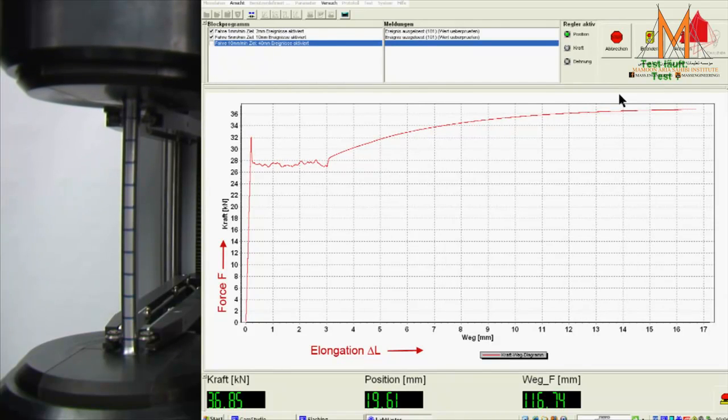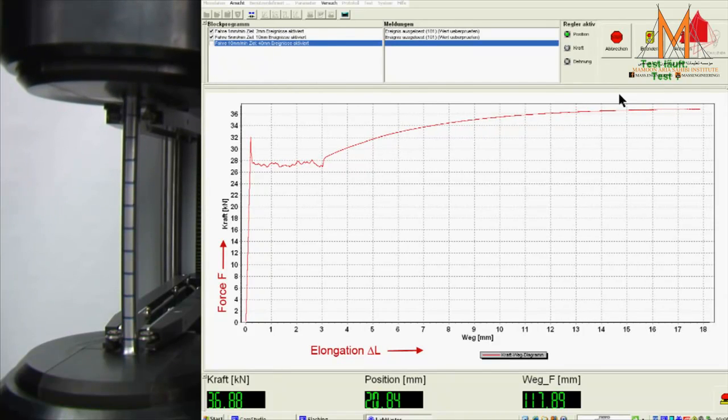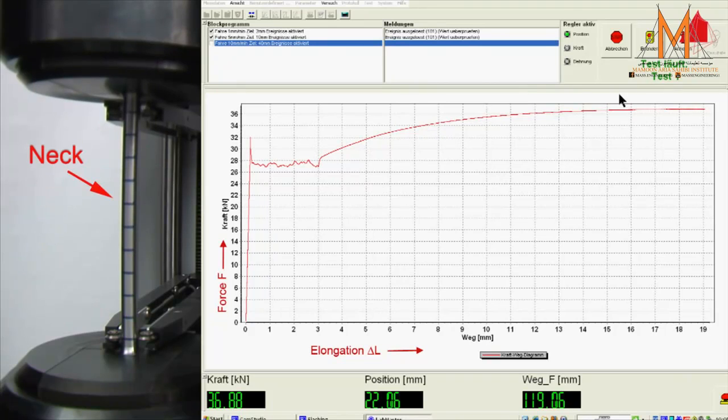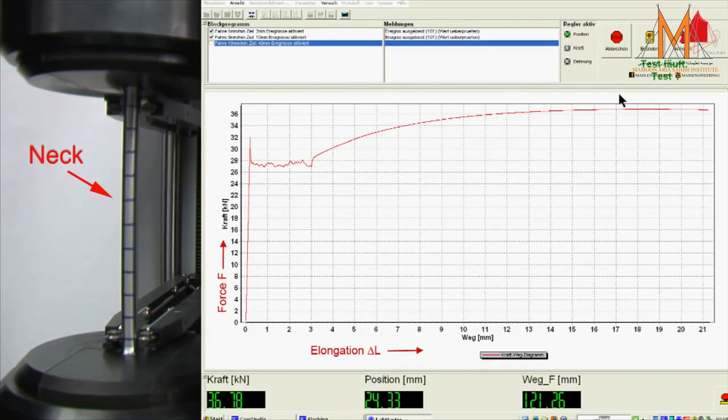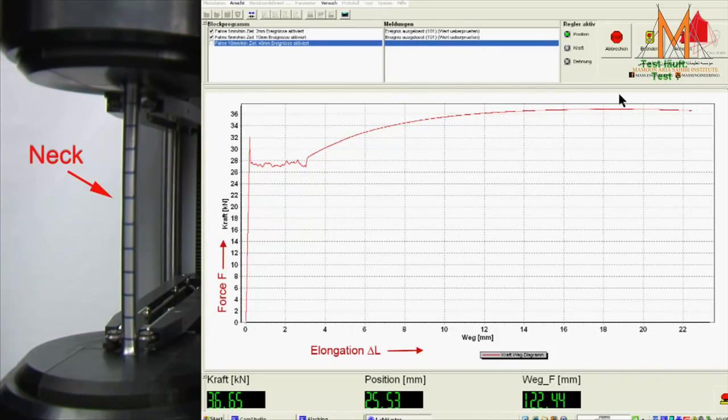As soon as the maximum force is reached, a neck begins to form at one point of the test piece. All further plastic deformation now only takes place at the neck and eventually the test piece fractures there.